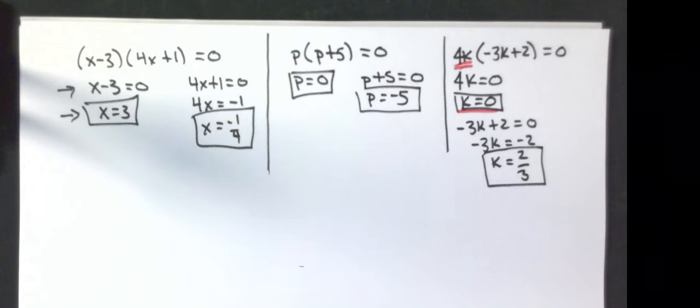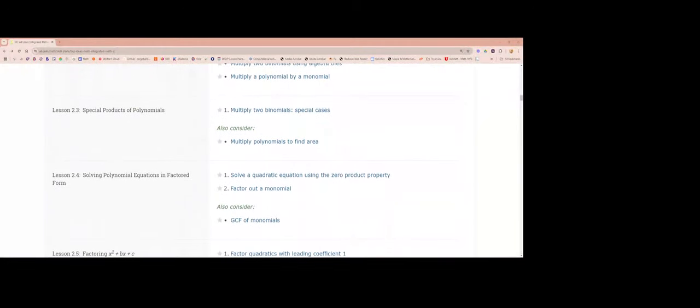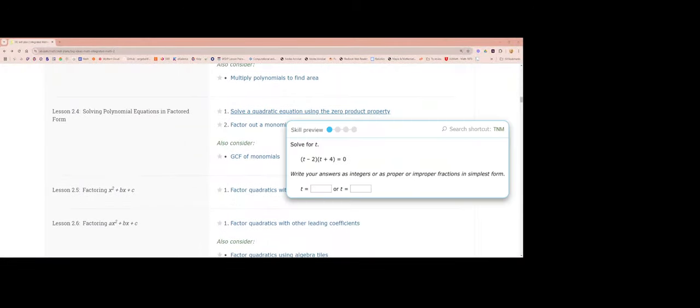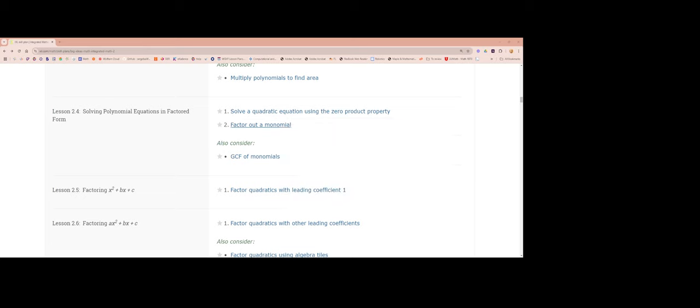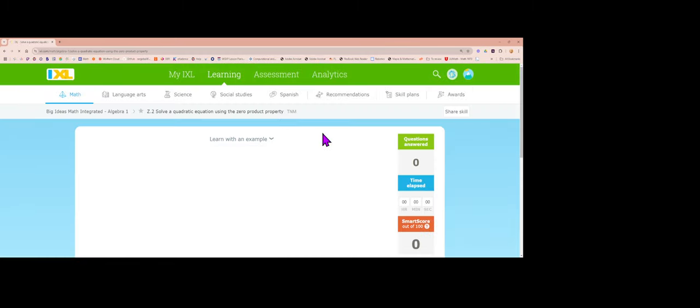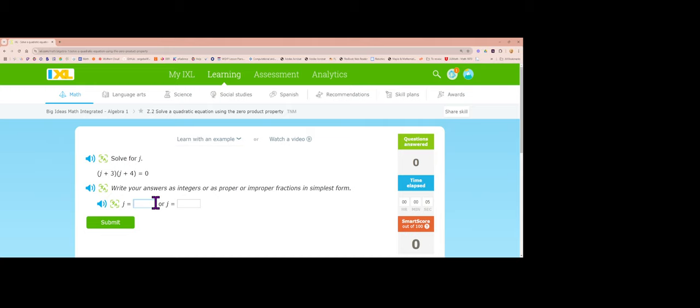If it is already in factored form, which is what this lesson's about, and I ask you to solve the equation, that is how you are going to end up doing it. We're going to go over and do some IXL on those. We're going to concentrate on solving quadratics using the zero product property. Solve for j. If there's no number in front of these letters, it's just the opposite of what is ever in the parentheses.